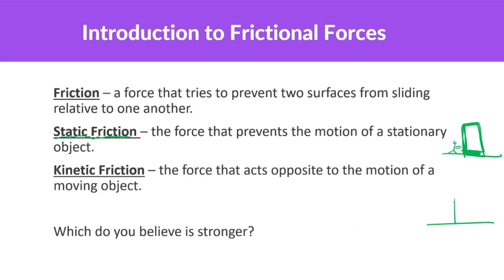However, let's say you have this large cabinet again, but you are pushing on it and it is moving — you got it moving. So even though it is moving, there is a force of kinetic friction on it. In the stationary case, you're pushing a force applied, but it's not moving, and there's a force of static friction on it. That's the difference between the two.